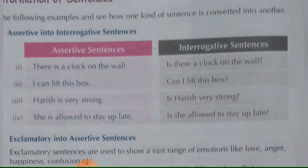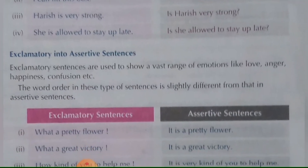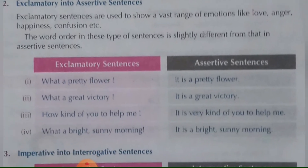Now, exclamatory sentences into assertive sentences. Exclamatory sentences show a vast range of emotions like love, anger, happiness, confusion, etc. The word order in this type of sentence is slightly different from that in an assertive sentence.